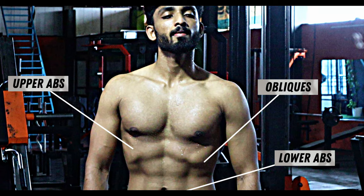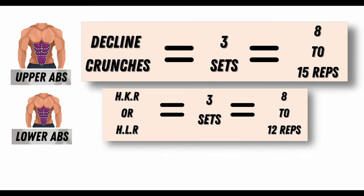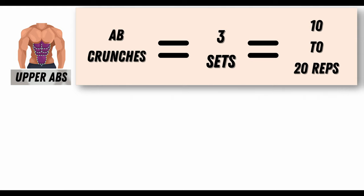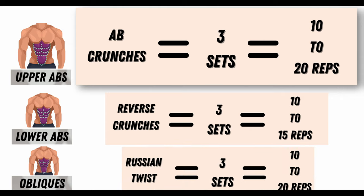Here is the full workout routine. Upper abs: Decline Crunches — 3 sets, 10-20 reps. Lower abs: Hanging Leg Raises — 3 sets, 10-12 reps; Reverse Crunches — 3 sets, 15 reps. Obliques: Russian Twist — 3 sets, 10-12 reps. This covers upper abs, lower abs, and obliques.